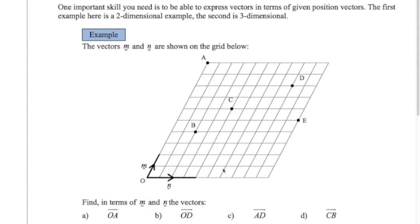One important skill that you will have learnt last year in the IGCSE course is expressing any given vector in terms of position vectors or any given vectors. So we've got a few examples here — a two-dimensional example. I've defined two position vectors m and n, so the point M might be there and the point N might be there. We want to get all these four vectors in terms of m and n. The grid is deliberately skewed here because I don't want you thinking it's always going to be up and down.